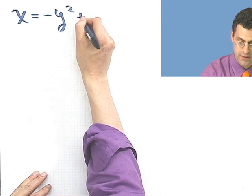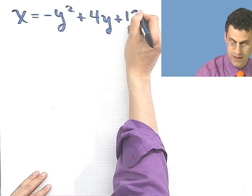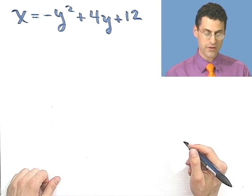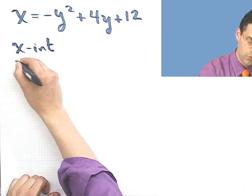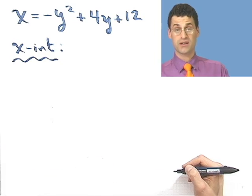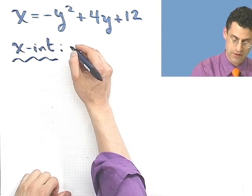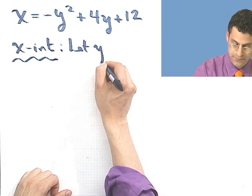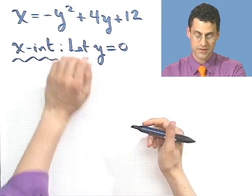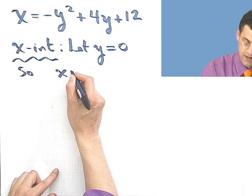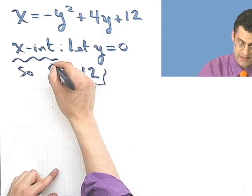Let's look at one last example: x equals minus y squared plus 4y plus 12. First, let's find the x-intercept. To find the x-intercept, we let y equal 0 — we always let the opposite variable equal 0. If y equals 0, all those terms vanish and it's easy to see that x has to be 12. So there's only one x-intercept, at x equals 12.